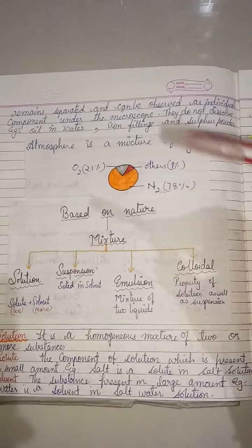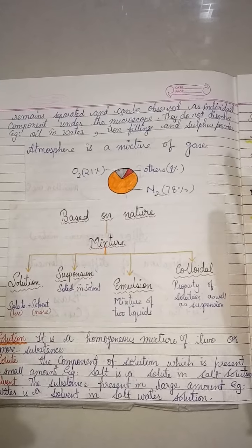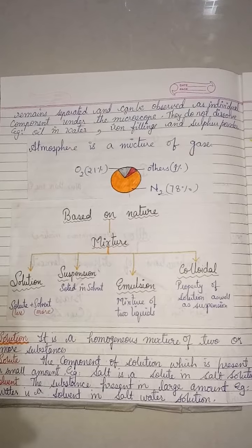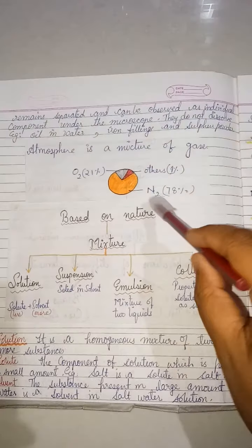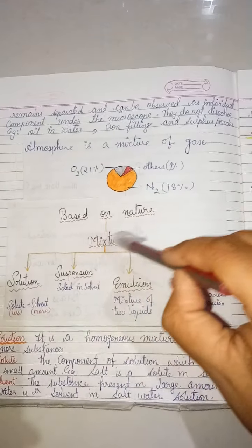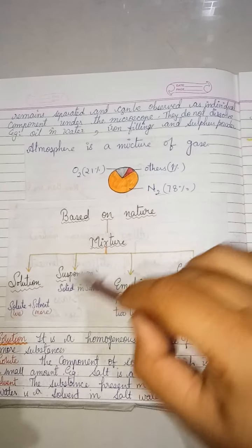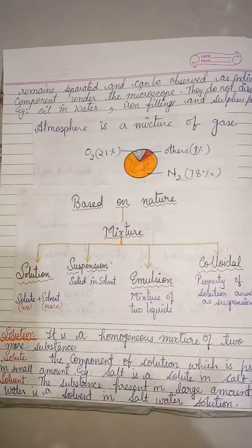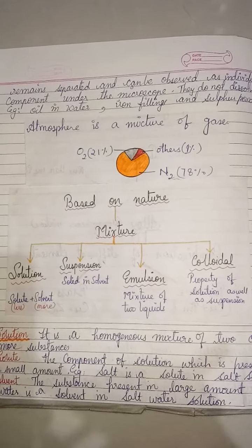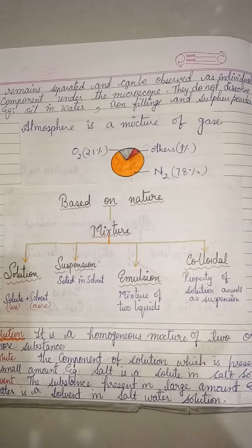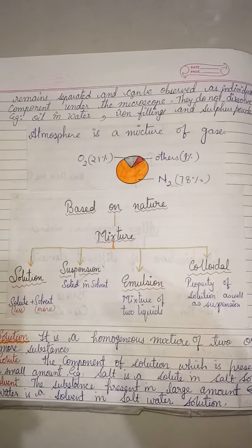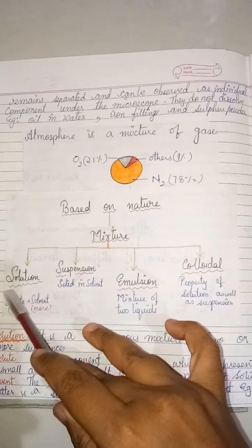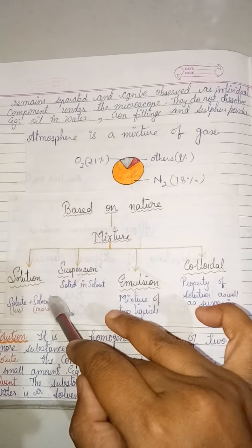Mixtures can be homogeneous or heterogeneous, uniform or non-uniform throughout. Based on the nature of particles present, mixtures are classified into four categories: solution, suspension, emulsion, and colloids (or colloidal solution). A solution is made up of solute and solvent — solute is less, solvent is more.